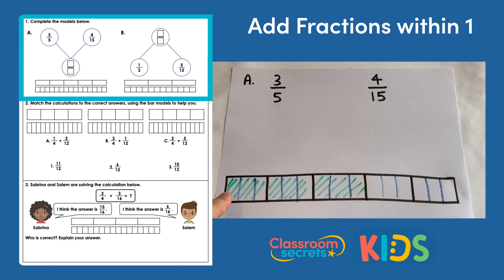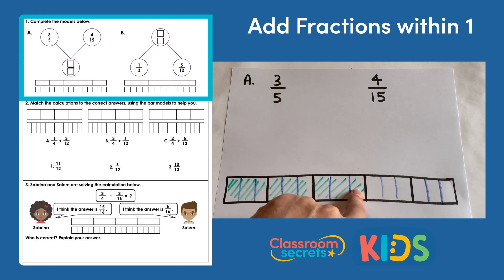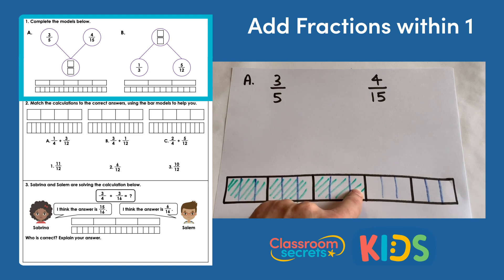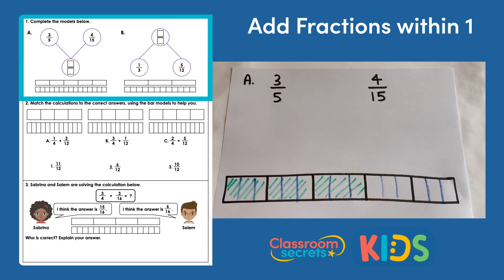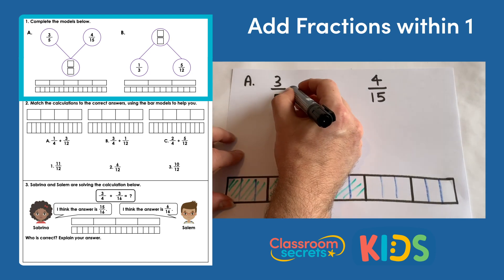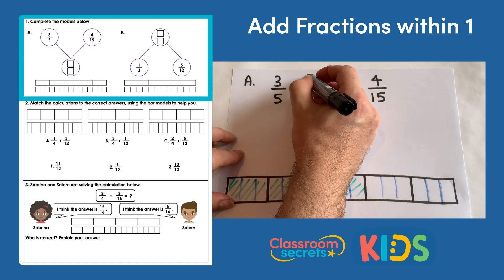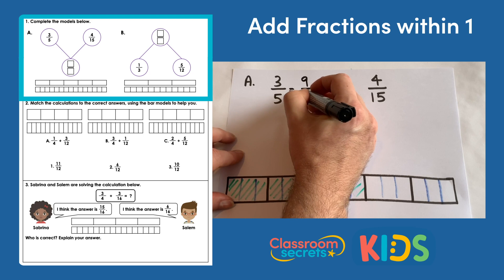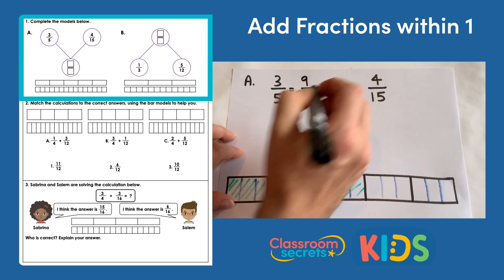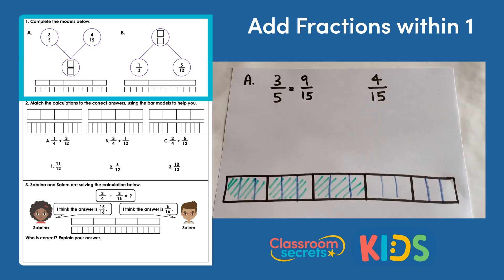As fifteenths we now count one through to nine — so we have nine fifteenths. Three fifths is equivalent to nine fifteenths.